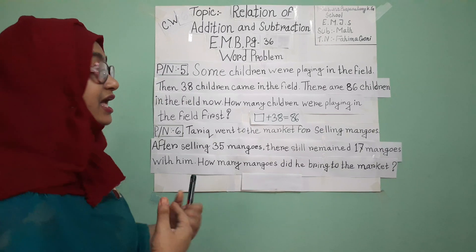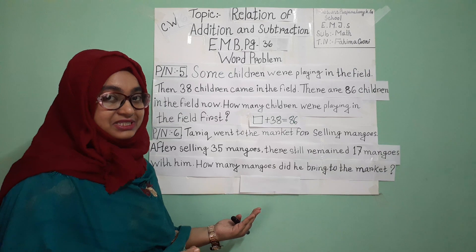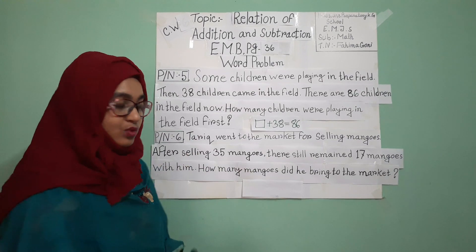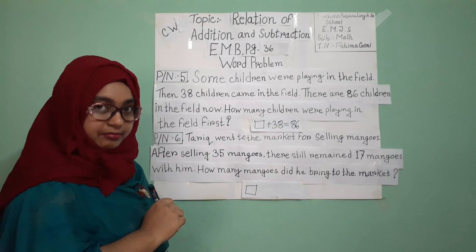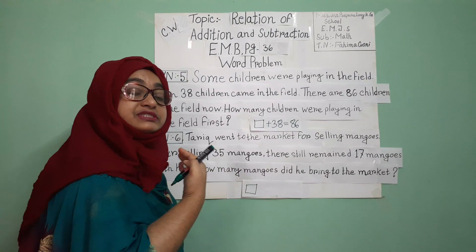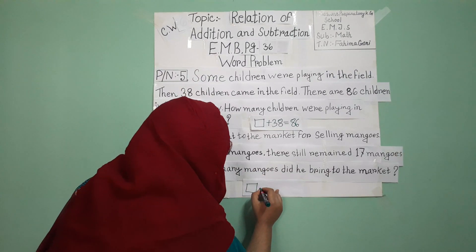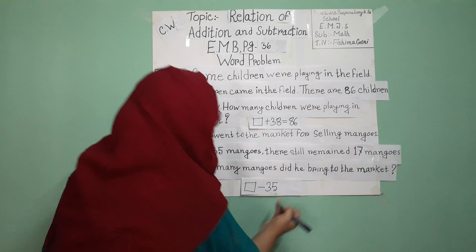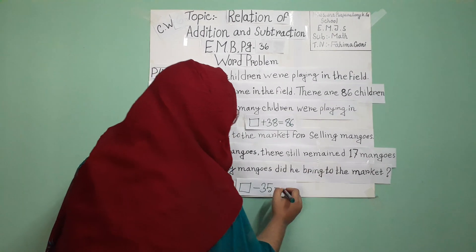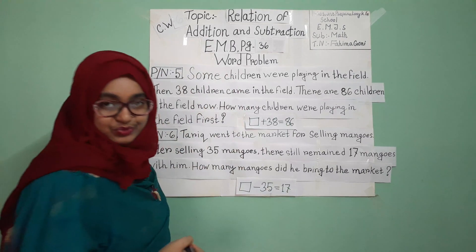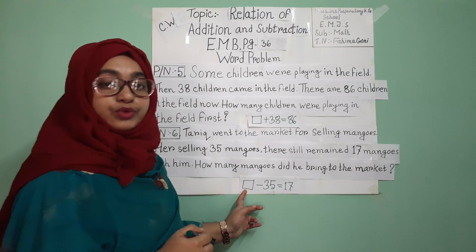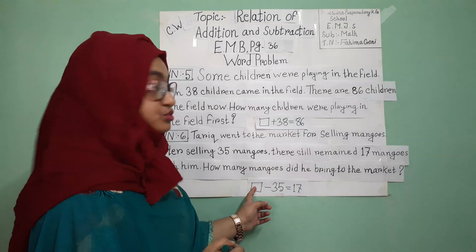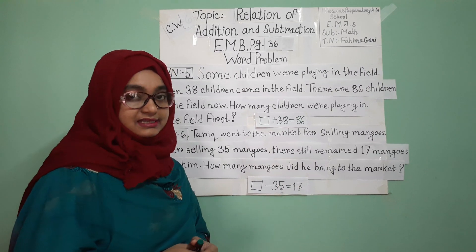Let me show you the real face of this problem. Tariq went to the market for selling mangoes — it is the total number of mangoes, and it is totally blank. They didn't tell us the total number. He has sold 35 mangoes — it has been taken away, it has been sold — that means it is subtraction, minus sign. 35 mangoes he has sold, and after selling 35 mangoes, how many mangoes are there now? 17 mangoes. In subtraction, the first number must always be greater. That's why we have to do the addition — add these two numbers using a statement.